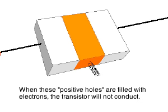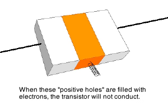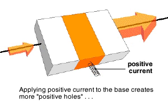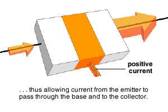But when these holes are filled, the resulting negative charge repels further electrons that would come from the emitter. The transistor does not conduct. But when a small positive current is applied to the base, it will produce additional holes that will, in turn,